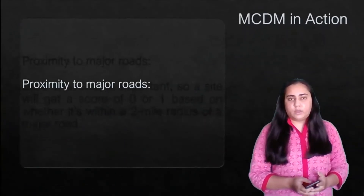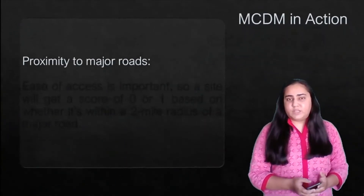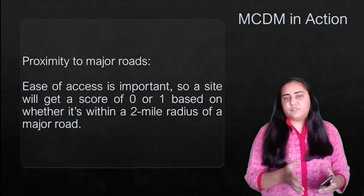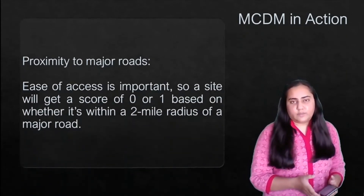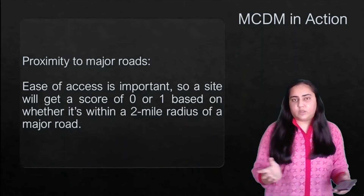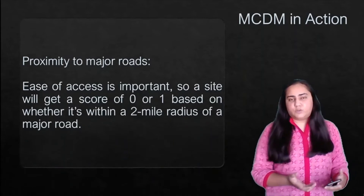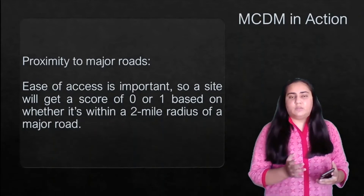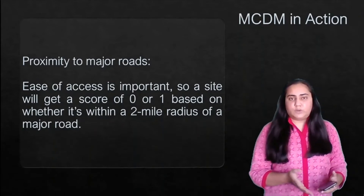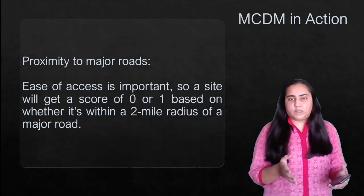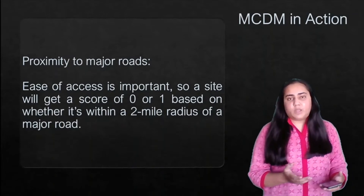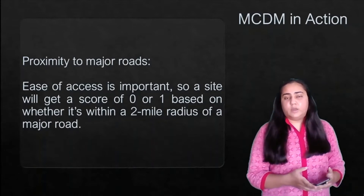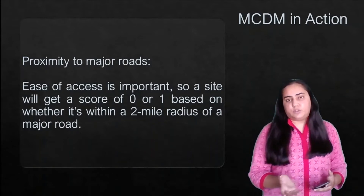The first criterion is proximity to major roads. Ease of access is very important — if there's a highway or major road where transportation is easy, that's a plus point. A site would get a score of zero or one based on whether or not it is within a two-mile radius of a major road.